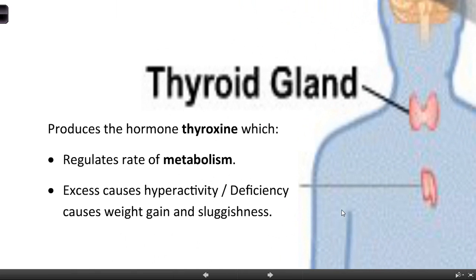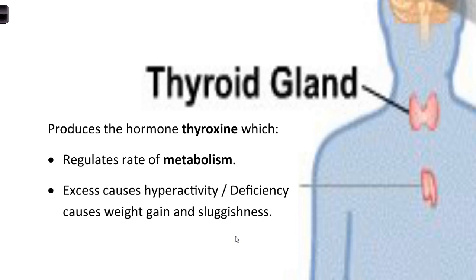The thyroid gland produces a hormone called thyroxine, which basically regulates our rate of metabolism. Excess thyroxine causes a sort of hyperactivity, and deficiency - if you don't produce enough - causes weight gain and sluggishness. So thyroxine is a hormone that regulates our metabolism, which is the rate at which chemical reactions are occurring inside us.